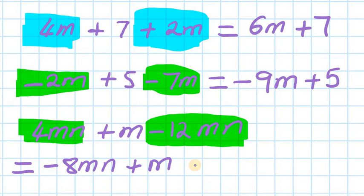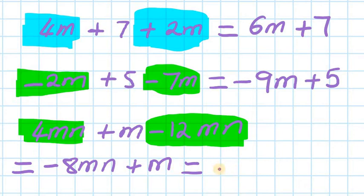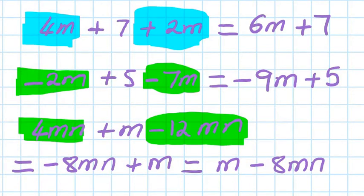Now in algebra, we normally do not write a negative in front unless we have no choice. But at the moment I can switch around and it looks nicer — so the m in front, because m is positive. So I can write m minus 8mn. There you go.